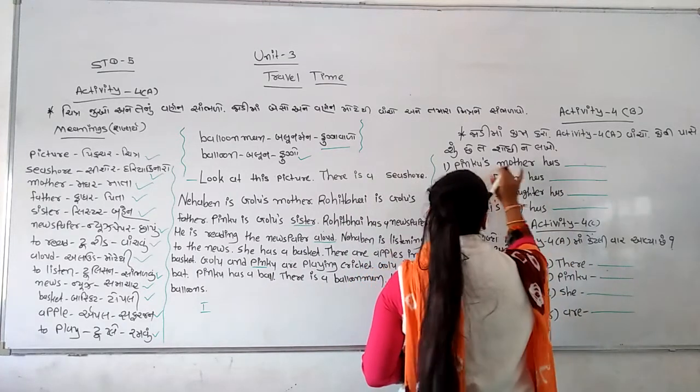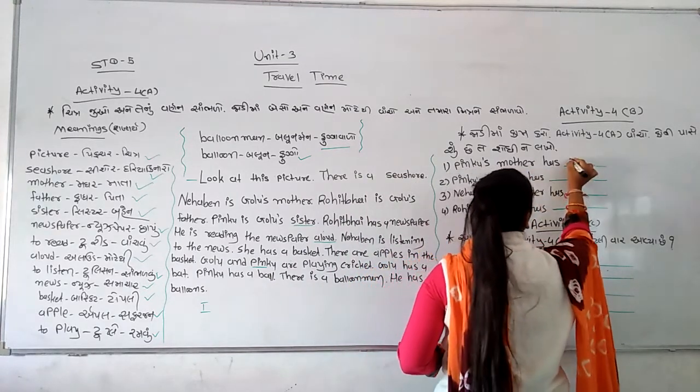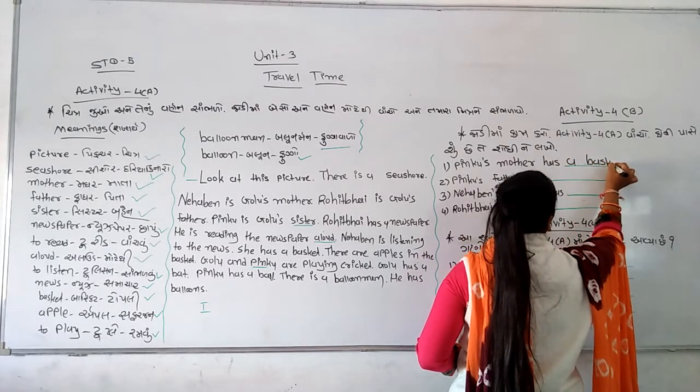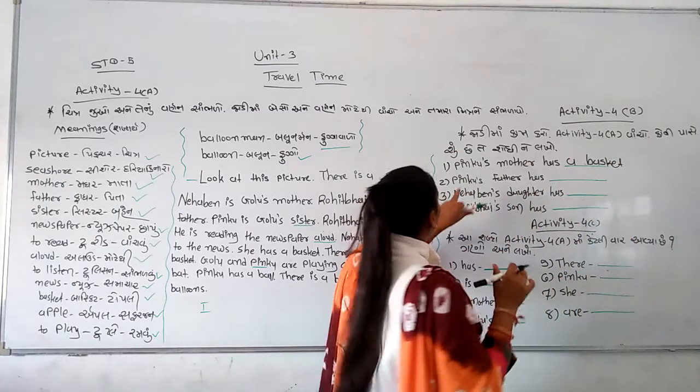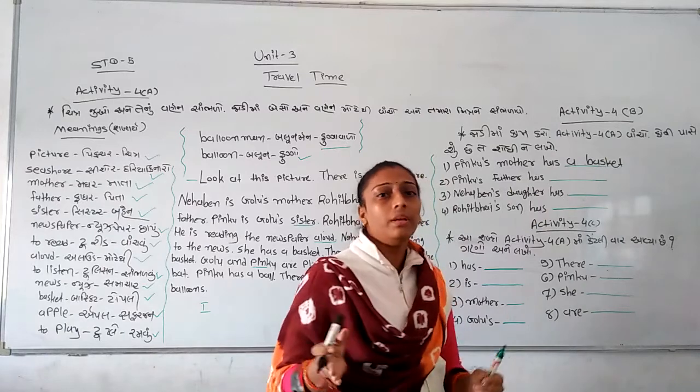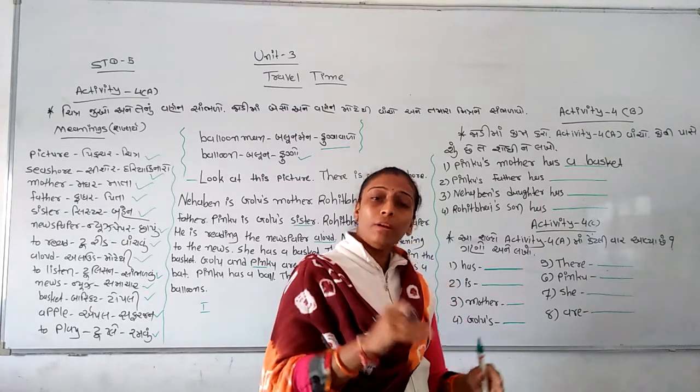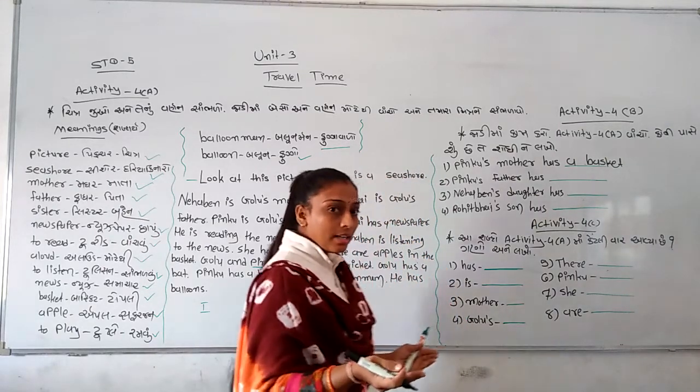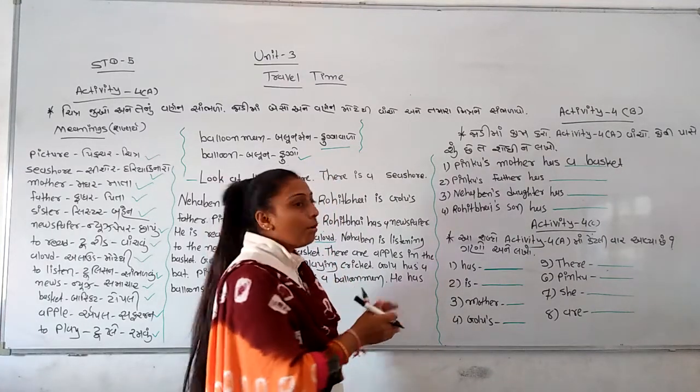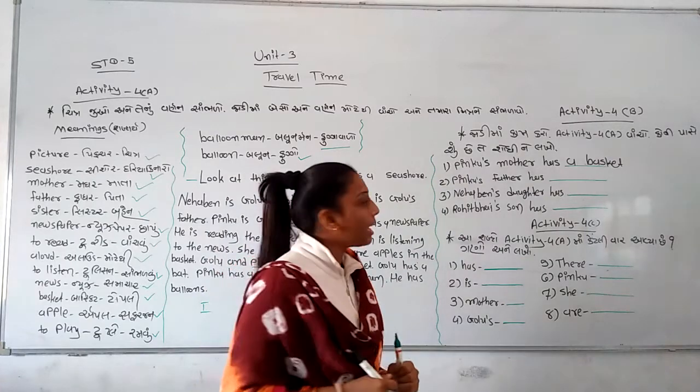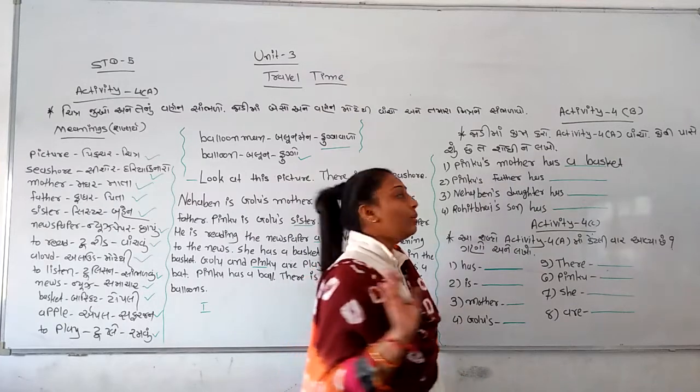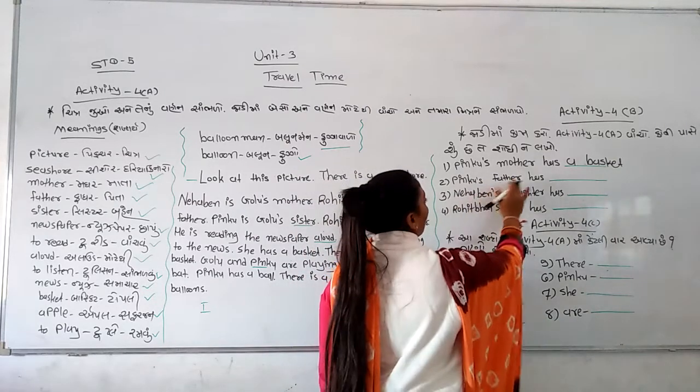Now, what does it mean? Pimpu's mother has her basket. Pimpu's father has Pimpu number 4. Pimpu number 4. And then, father, when people are playing, Pimpu number 5.